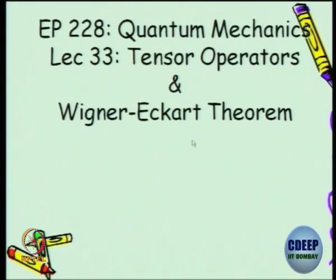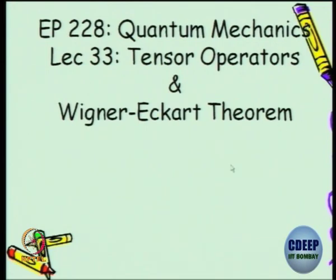We have talked about selection rules — which transition is possible under parity and so on. This is formally for rotationally invariant systems. You can put it in a form of a theorem which is called the Wigner-Eckart theorem. So these two are the themes for today's lecture and let us see how much I can progress.